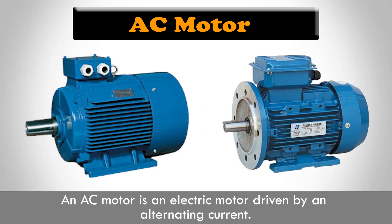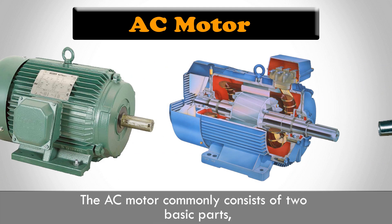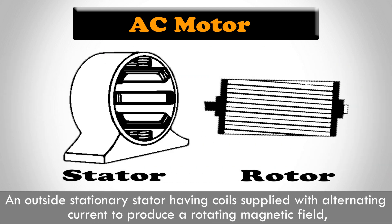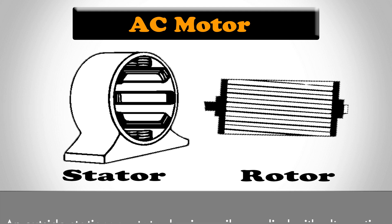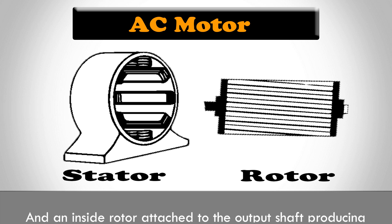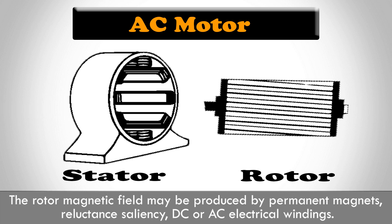An AC motor is an electric motor driven by an alternating current. The AC motor commonly consists of two basic parts: an outside stationary stator having coils supplied with alternating current to produce a rotating magnetic field, and an inside rotor attached to the output shaft producing a second rotating magnetic field. The rotor magnetic field may be produced by permanent magnets, reluctance saliency, or DC or AC electrical windings.